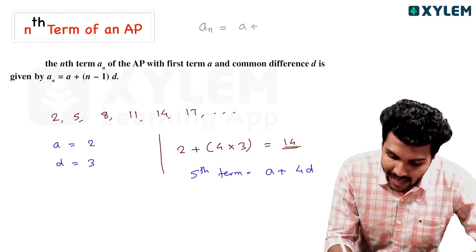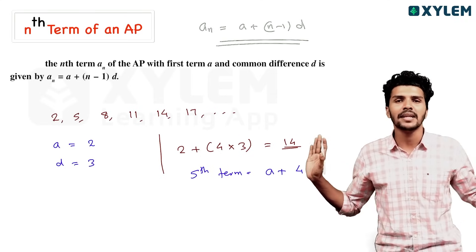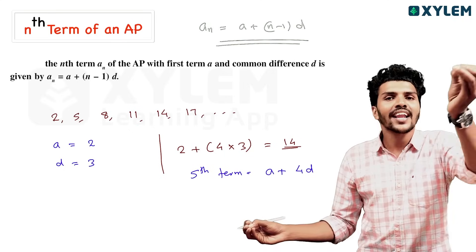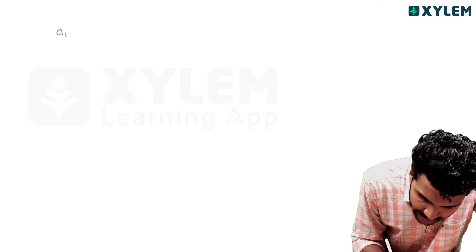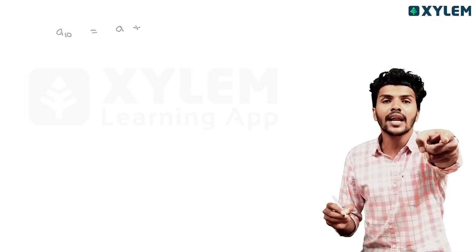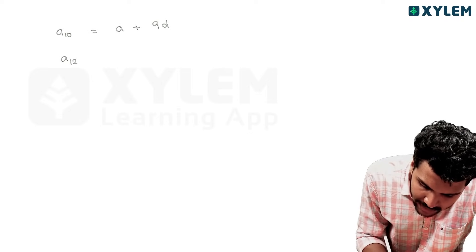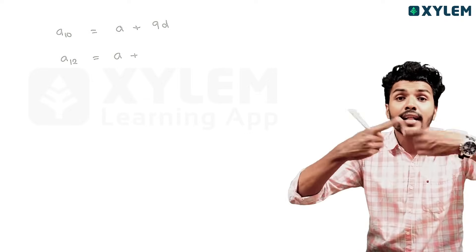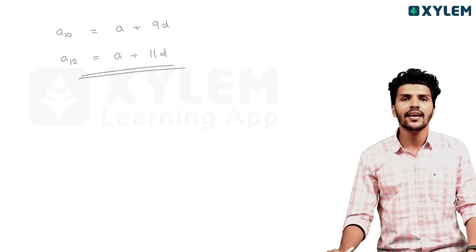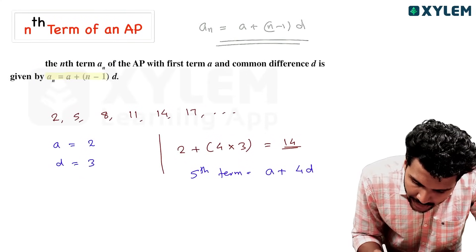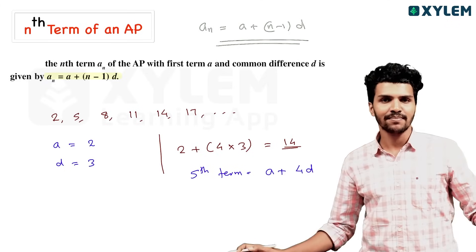The nth term formula is: aₙ = a + (n−1)d. For example, to find the 12th term, you take a plus 11d. So, the nth term is a + (n−1)d. This is simple.